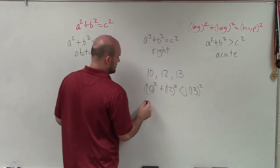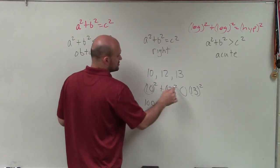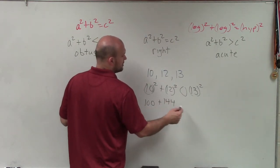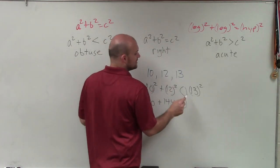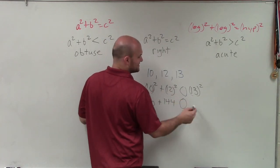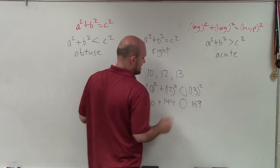So 10 squared is 100 plus 12 squared is 144, less than, greater than, or equal to 13 squared, which is 169.